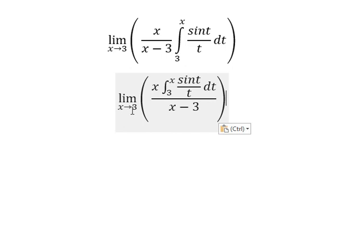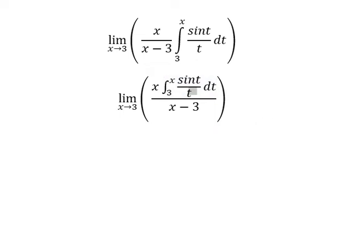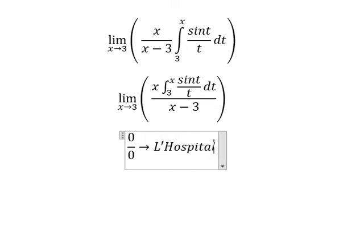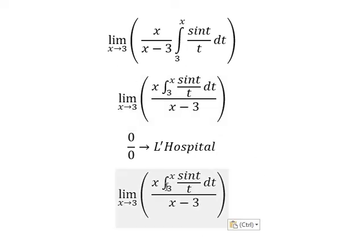When X approaches number three, the numerator and denominator both equal zero — the top equals the bottom — so we get zero over zero. That means we can use L'Hôpital's Rule, which means we need to take the first derivative of the numerator and denominator.